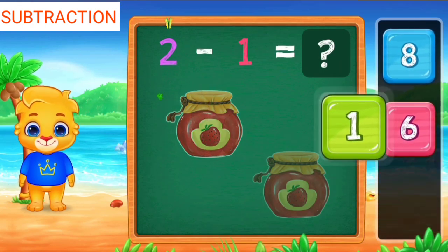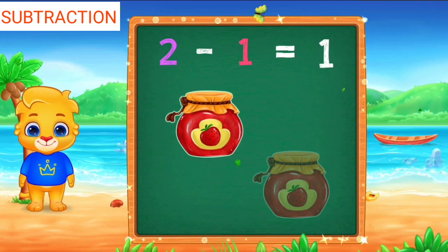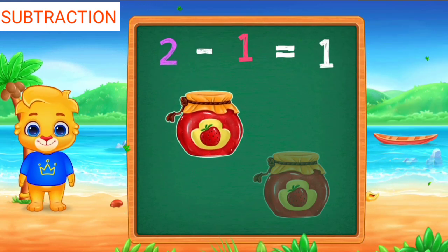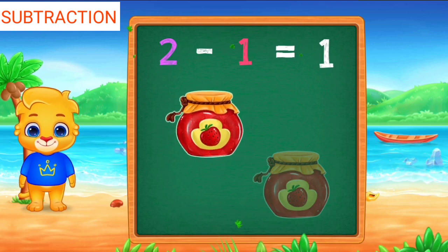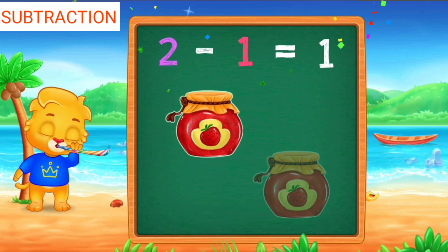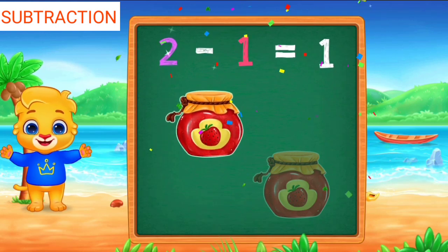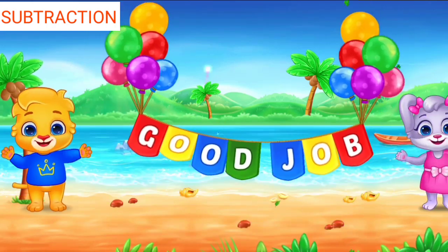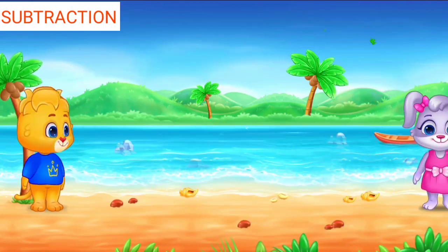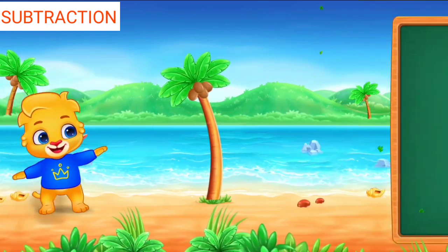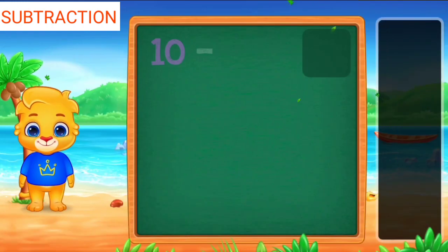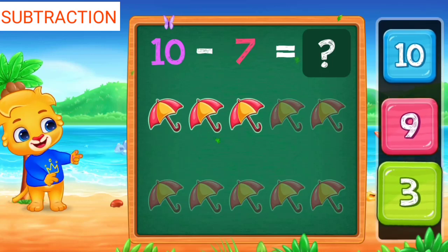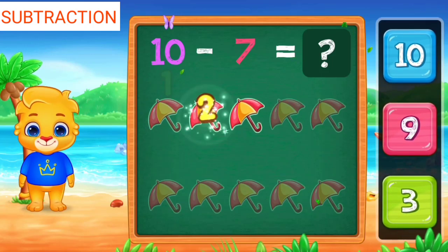One, two, one, one, two, three, two minus one equals one, one, two.